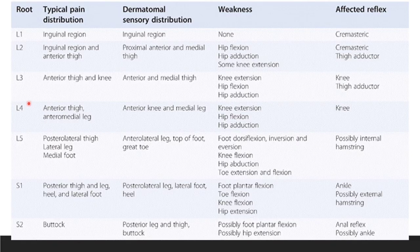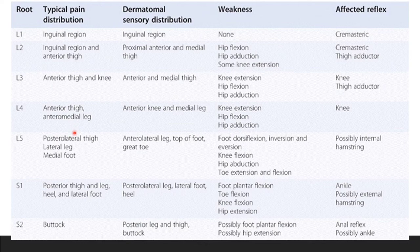Typical clinical presentations by nerve root level: L1 nerve root produces inguinal region pain; L2 produces inguinal or anterior thigh pain; L3 produces anterior thigh pain; L4 produces anterior thigh or anterior leg pain; L5 produces posterolateral thigh or lateral leg pain; S1 produces heel pain; and S2 produces buttock pain.